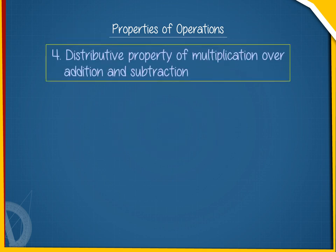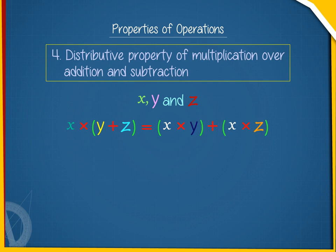4. Distributive property of multiplication over addition and subtraction: For rational numbers x, y, and z, x multiplied by (y plus z) is equal to x times y plus x times z, and x multiplied by (y minus z) is equal to x times y minus x times z.